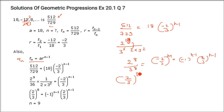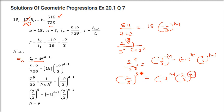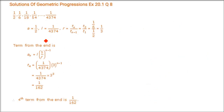We have (2/3)^8 and (−1)^(n−1) · (2/3)^(n−1). Equating the powers of 2/3: n−1 = 8, so n = 9. Therefore, the 9th term is 512/729.